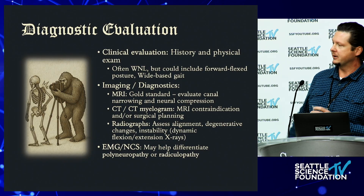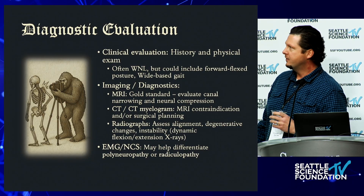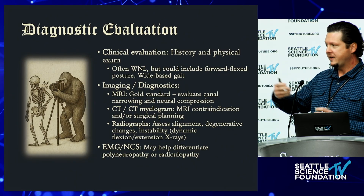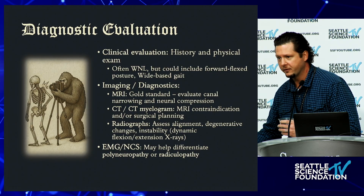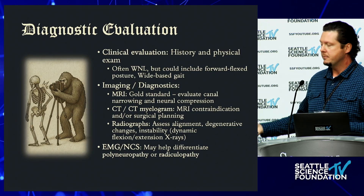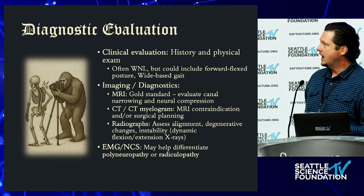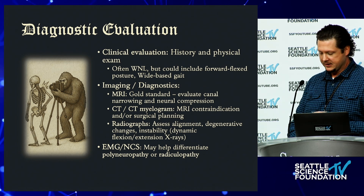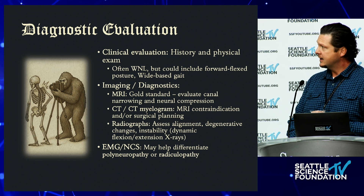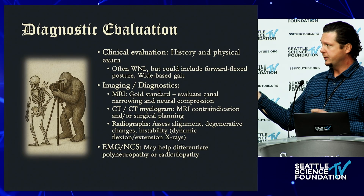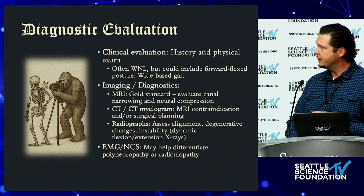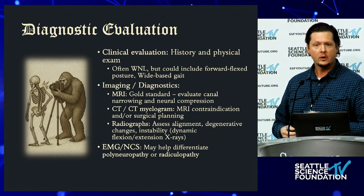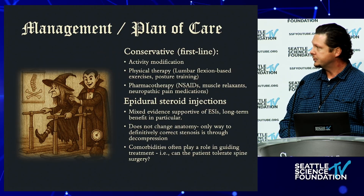Classic spinal stenosis may be difficult to fully discern on physical exam, but more advanced cases may present with a forward-flexed gait and widened base of gait. The gold standard for imaging is MRI, but flexion-extension radiographs, CT, and CT myelogram can also be quite useful, particularly if there are contraindications to MRI.